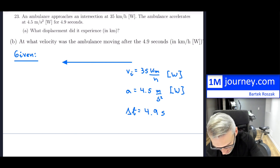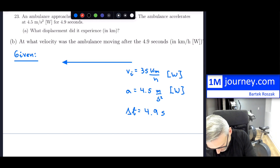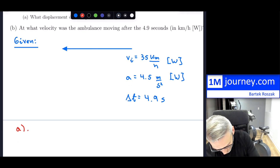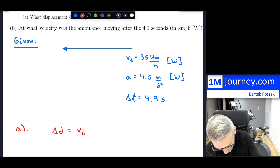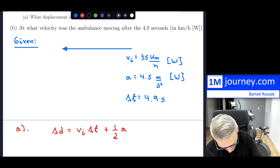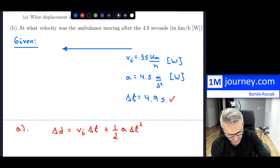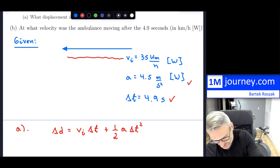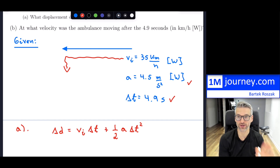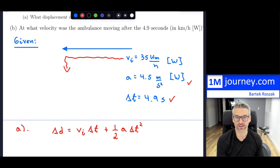For part A, we'll find the displacement. The equation is delta D equals VI times delta T plus one-half times acceleration times delta T squared. The problem is the speed is in kilometers per hour while acceleration is in meters per second squared. So I'm going to convert VI to meters per second first, find the answer in meters, then convert to kilometers.